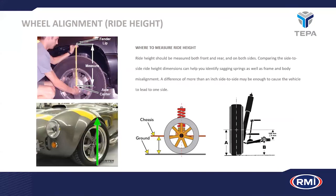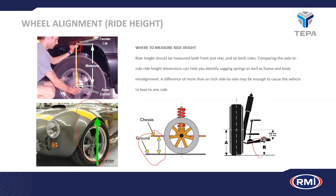Measuring ride height is taken in two different locations. You can measure between the center hub of the vehicle and the fender top, as shown in the picture. Another method is to measure from the ground to the fender arch. Alternatively, underneath the vehicle on the right-hand side schematic, you can measure between the ground and the center line of the hub.